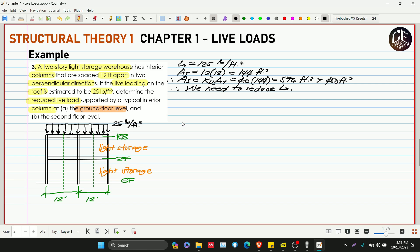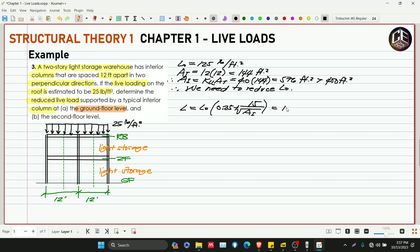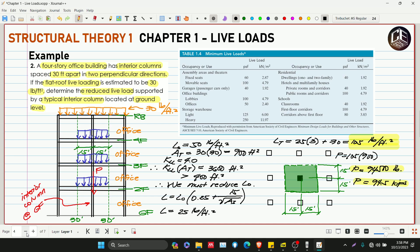Yung ating reduced live load is equivalent to L-not multiplied by 0.25 plus 15 over square root of our influence area. So 125 multiplied by 0.25 plus 15 over square root of 576, so this is 109.375 pounds per feet squared.